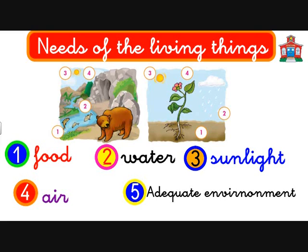So we have seen the five needs: food, water, sunlight, air, and adequate environment.